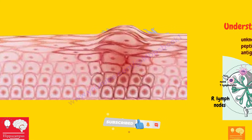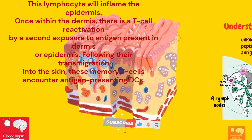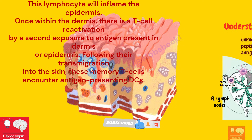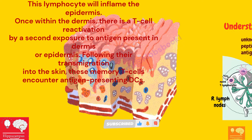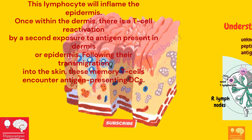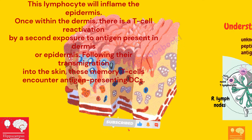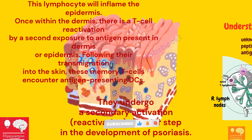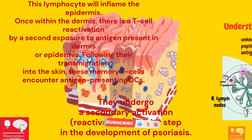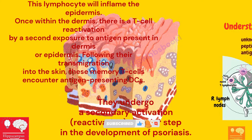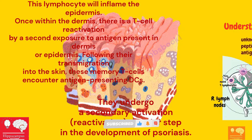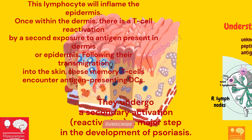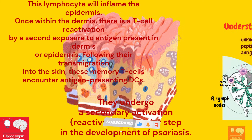Once within the dermis, there is T-cell reactivation by the second exposure to antigen present in the dermis and epidermis. Following their transmigration into the skin, these memory T cells encounter antigen-presenting cells and undergo a secondary activation known as reactivation — a major step in the development of psoriasis.